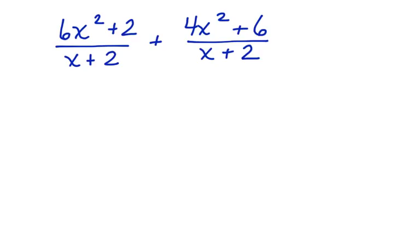Did you know that you can add and subtract rational expressions? Let's take a look at an example, and then we can talk about how to do this. Because rational expressions have a fraction bar, we use the same rules for adding and subtracting rational expressions that we would use for adding and subtracting fractions. When we add and subtract fractions, you have to have a common denominator. The same is true with rational expressions.